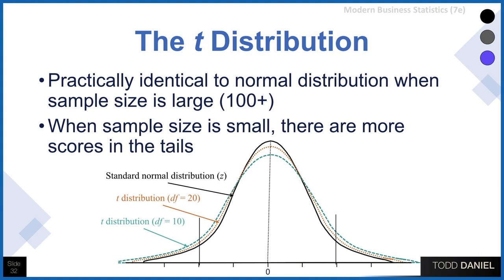You can see that it is very similar to a normal distribution, the normal distribution being the solid black line. However, as sample sizes get smaller — from sample sizes of 20 to 10 — we see that at the top of the curve, our t-distribution gets a little shorter, and in the tails, the tails spread out a little further.